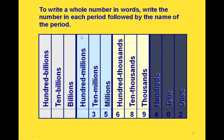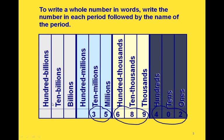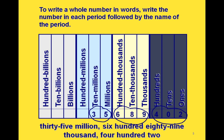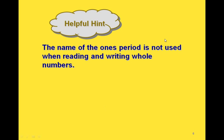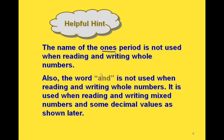If we want to write the number out in words, then we write the number that's in each one of those periods, followed by the name of the period. So if we look at the number in the leftmost period, the millions period, there's a 35. Then in the thousands period, we have a 689. And in this last period, we have a 402. So this number written out in words would be 35 million, 689 thousand, 402. Notice that we don't actually name the ones period when we're doing that.